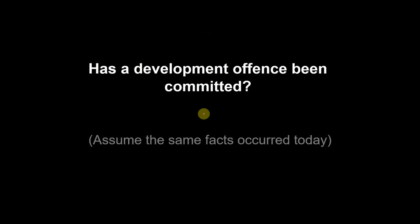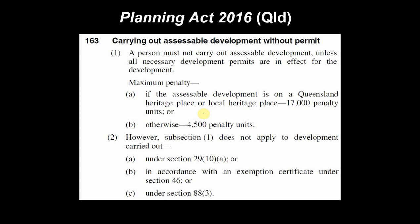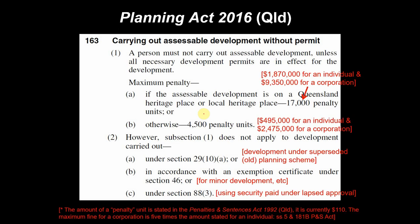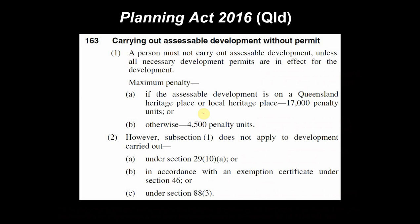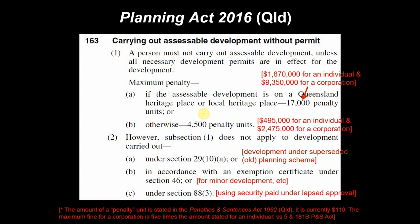Has an offence been committed if those same facts occurred today? Looking at section 163, subsection 2 lists exemptions referencing sections 29, 46, and 88. Section 29 deals with development under an old planning scheme, section 46 is for an exemption certificate with minor development, and section 88 is about using security paid under an elapsed approval. None of these are applicable in this case, so there's no get-out-of-jail-free card.